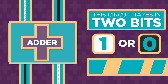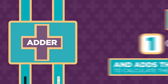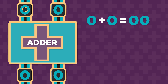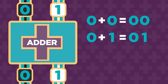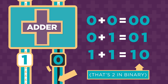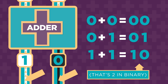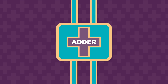The sum can be: zero plus zero equals zero, zero plus one equals one, or one plus one equals two. You need two wires coming out because it can take up to two binary digits to represent the sum.